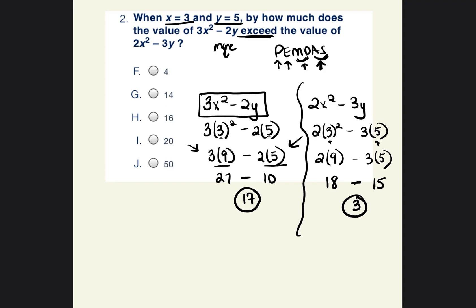But the question asks how much does this value exceed the other? They're asking how much more is 17 than 3. So we subtract: 17 minus 3 equals 14. It exceeds it by 14. So our answer is G.